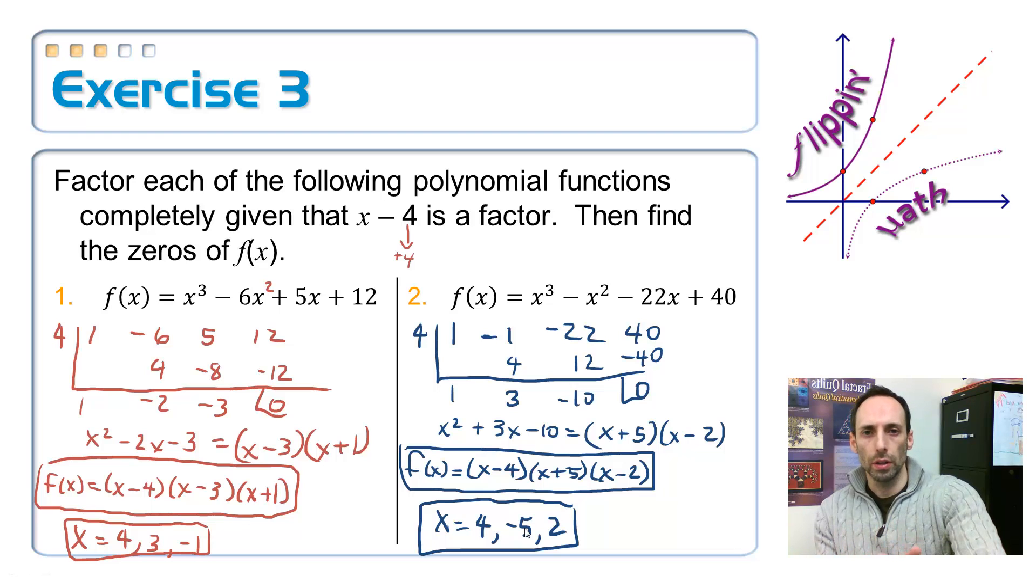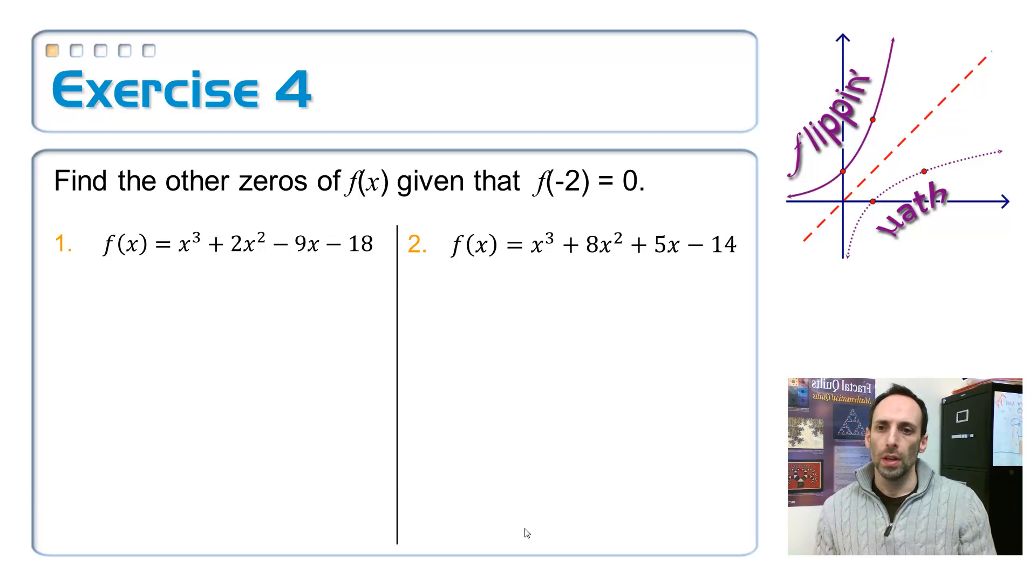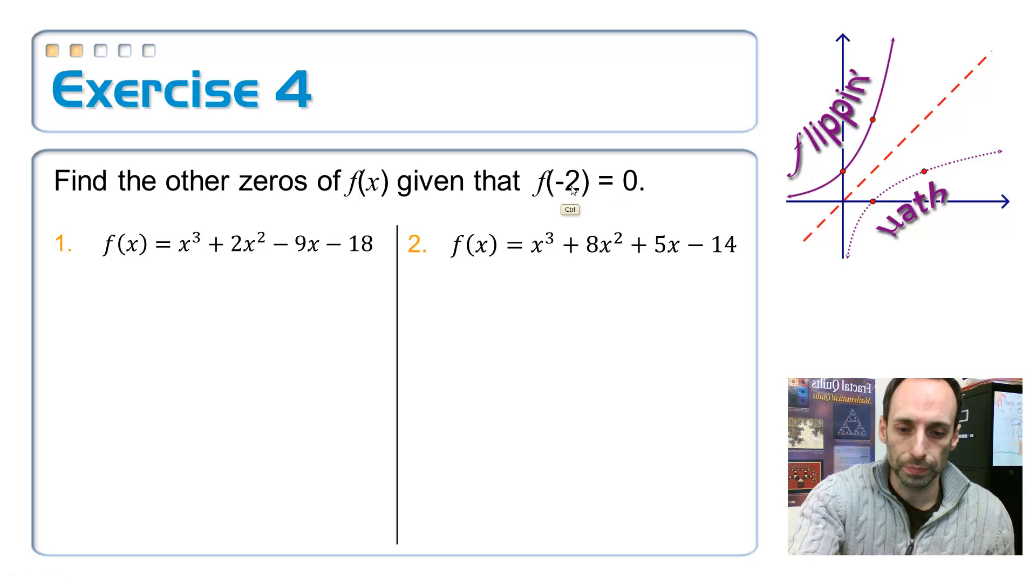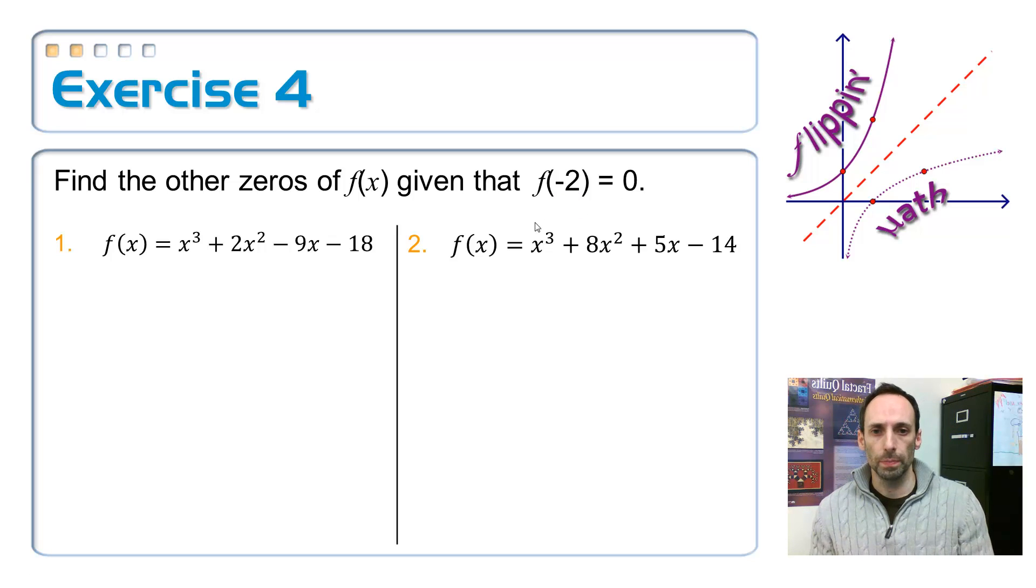So let's try this again. The problem is going to look a little bit different. But if you know what the factor theorem is saying, it should be a piece of cake. So find the other zeros of f of x given that f of negative 2 is equal to 0. This means, by the factor theorem, that x plus 2 is a factor.